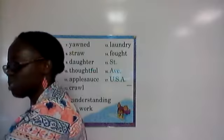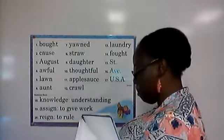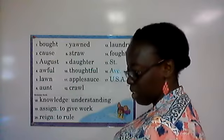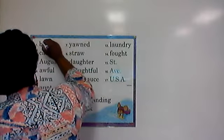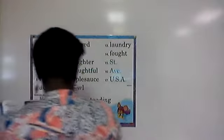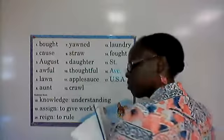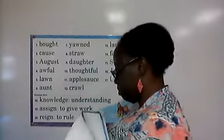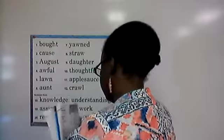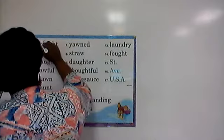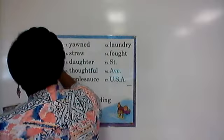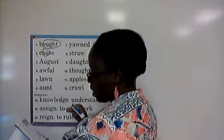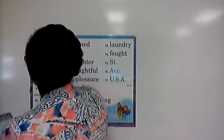All right, so I'm going to circle the special sounds in our list starting with the first word. Bought — special sound is 'ought' as in thought: O-U-G-H-T. Cause — we have 'au' as in faucet: A-U. In August, we also have 'au' as in faucet, as well as ST as in stop: S-T.